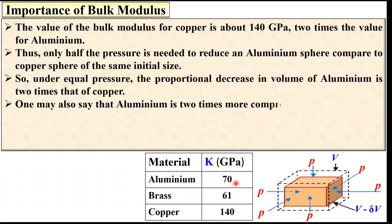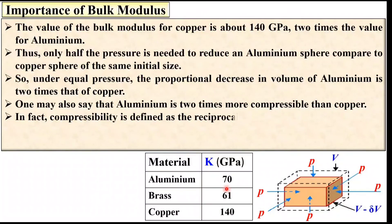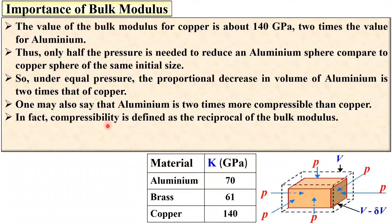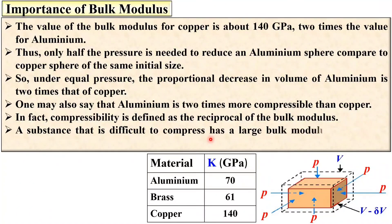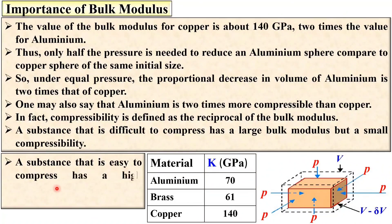One may also say that aluminium is two times more compressible than copper. Compressibility is defined as the reciprocal of the bulk modulus — so compressibility is the reciprocal of bulk modulus and vice versa. If bulk modulus is higher, compressibility is less. Aluminium has a lower bulk modulus, so it is more compressible than copper. A substance that is difficult to compress has a large bulk modulus but a small compressibility. A substance that is easy to compress has high compressibility but a low bulk modulus, because compressibility and bulk modulus are inversely proportional.